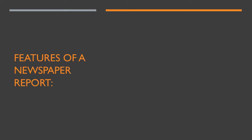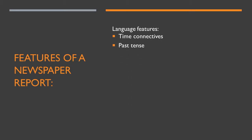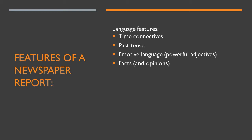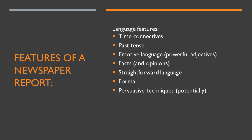Let's consider some more features of a newspaper report — language features. You want time connectives; you talk in the past tense; you want to use emotive language, so language that makes your reader feel something, and you can achieve this through using powerful adjectives and well thought-out descriptive words; you want to include facts and opinions; use straightforward language so as not to confuse the reader; keep it quite formal, because this is a formal document; and use persuasive techniques if you are arguing for something — but here you're just keeping it factual. Please copy this down now.